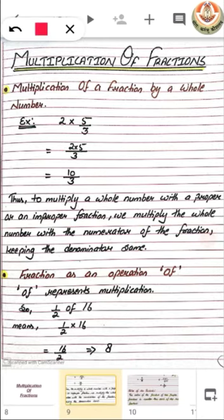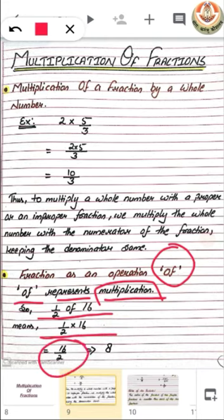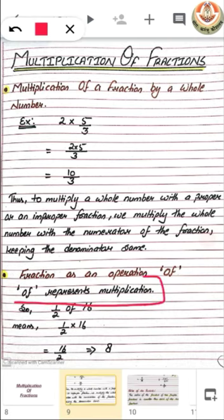Now there is a term 'of'. What does that 'of' mean? 'Of' represents multiplication. Whenever you see 'of' between numbers, it implies multiplication. For example, half of 16 means we can replace 'of' with a multiplication sign. Then we get half multiplied by 16, and half of 16 is 8. So 'of' represents multiplication.